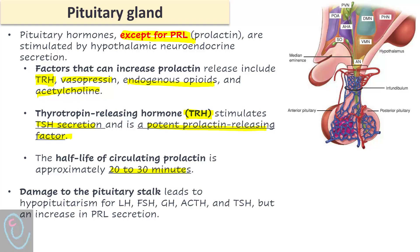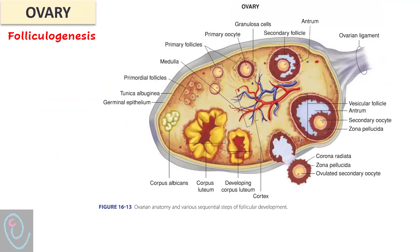The half-life of circulating prolactin is 20 to 30 minutes. Damage to the pituitary stalk, which connects the hypothalamus and pituitary glands, will result in hypopituitarism — all hormones will decrease, except prolactin, whose level will increase. The second organ is the ovary, which has two functions: folliculogenesis and hormone production.